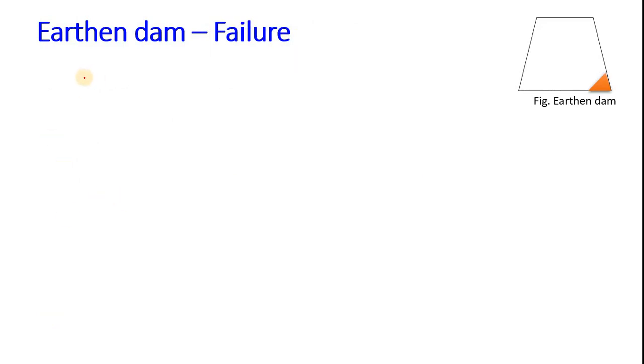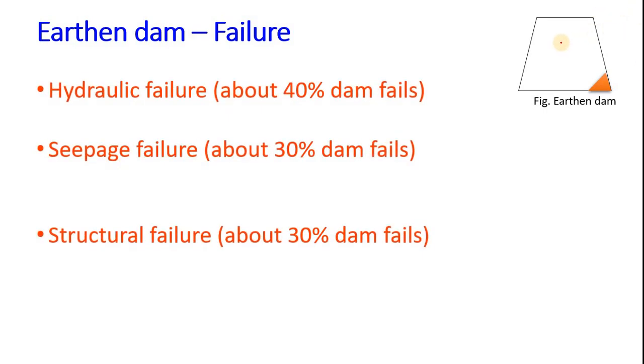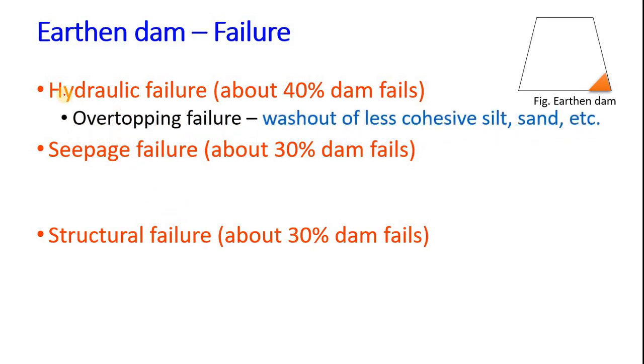Earthen dam failure: 40% of dams fail by hydraulic failure, 30% by seepage, and 30% by structural failure. In hydraulic failure, we will see overtopping failure. Overtopping failure means when water level increases during flood time and it overtops the dam, then it falls here and causes scouring and washes out the less cohesive silt and sand. This causes overtopping of the dam.